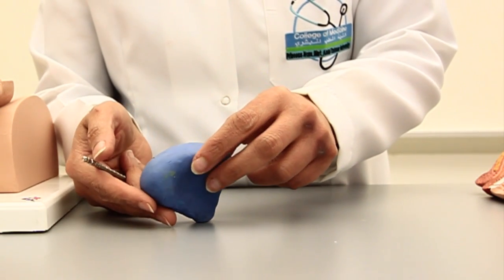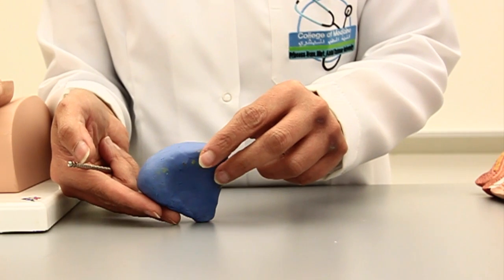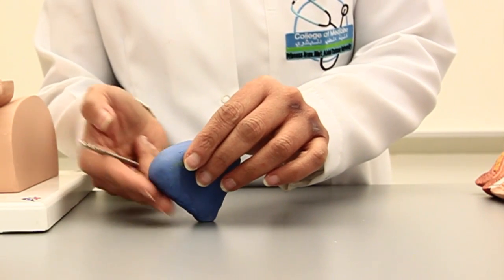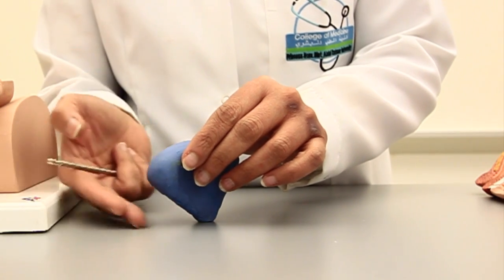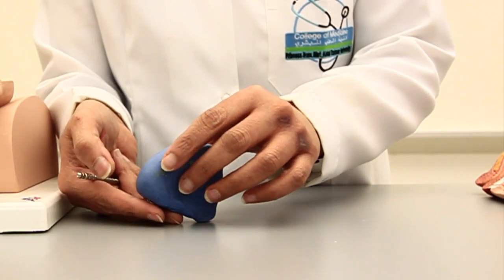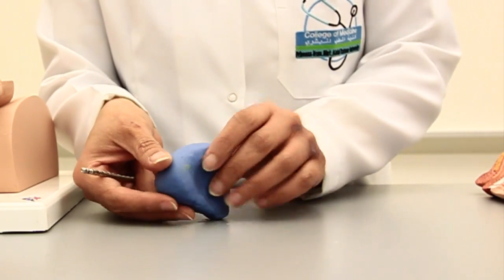Why we call it the base? Because imagine my fingers are representing the pelvic floor or pelvic diaphragm. So this is the surface or the wall of the urinary bladder which is resting on the floor. So this is the base of the bladder.